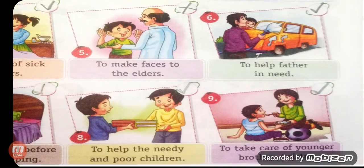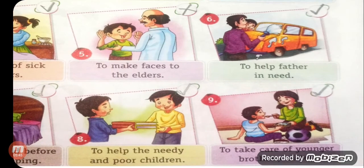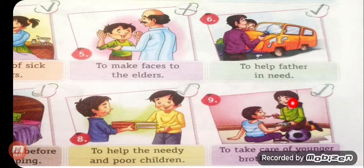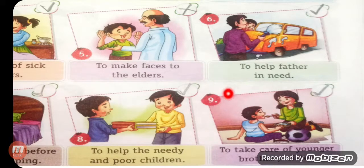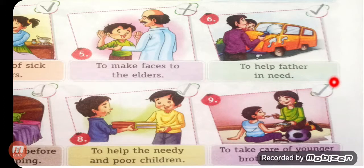Number 9: to take care of your younger brother and sister. It is a good quality. You are showing good behavior towards your younger brother and sister — you are being good to them by loving and caring for them. Again, put the sign of right.